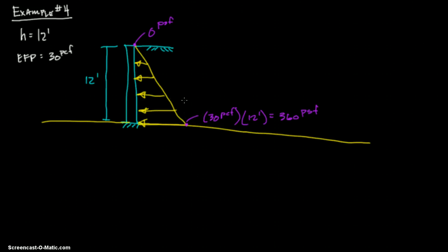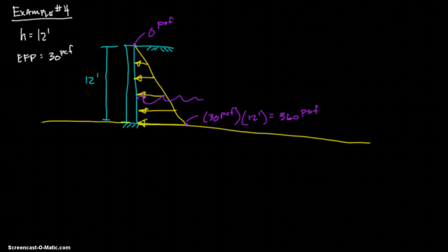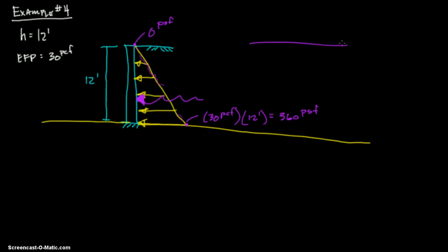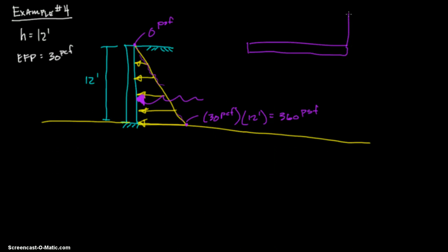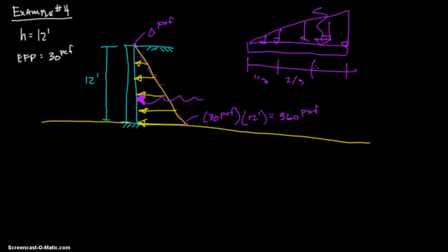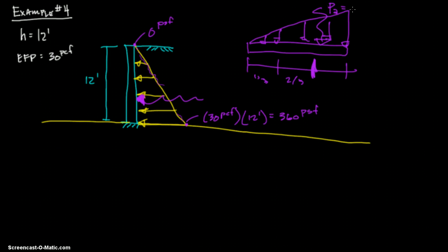So that's our wedge, but what exactly is this? This value and this value, this value is 0 PSF. And this value is going to be 30 PCF times the depth, which is 12 foot. So 30 times 12 is 360, and that's PSF. And now what you want to do is find the equivalent load. This is similar to how we figured out the equivalent load when we were doing our shear moment diagrams.